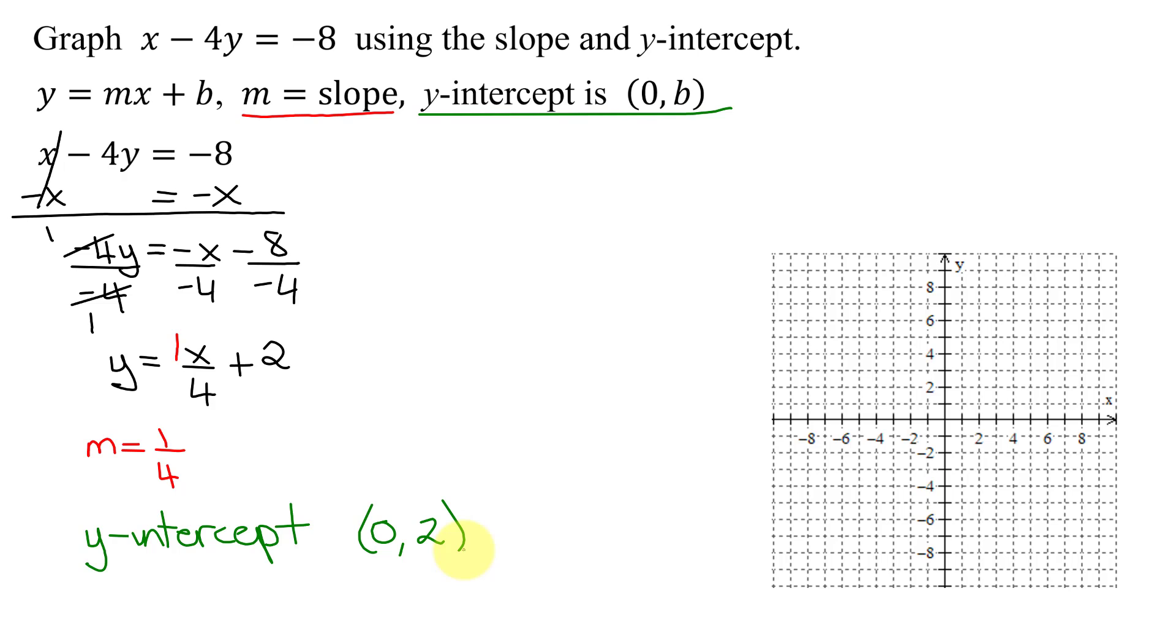So now we're ready to graph this line. We're going to start with the y-intercept, 0 comma 2. Start at the origin, x is 0, go nowhere in the x-direction, y is 2, go up 2 units. So there is my y-intercept.